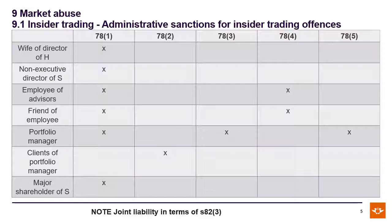The wife of the director — what did they do, which offense are they guilty of? They traded on those shares, the same as the non-executive director — section 78.1. Then we get to the employee: the employee traded, so section 78.1. But the friend of the employee also traded, which means information was disclosed, and that is why section 78.4 is there as well — that information was disclosed to other people. Was it disclosed by virtue of his employment? He told his friend, so no defense. The portfolio manager traded on his own account — section 78.1 — and also traded on behalf of his clients — section 78.3.